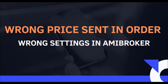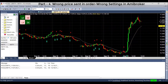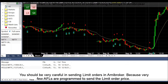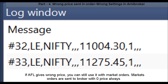Wrong price sent in order. You should be very careful when sending limit orders in ME Broker, because very few AFLs are programmed to send the correct limit order price. We recommend taking professional help from a programmer to fix problems in your AFL code. If the AFL gives a wrong price, you can still use it with market orders, since market orders are always sent to the broker with zero price.